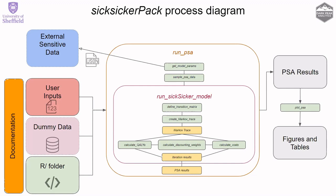The plot_psa function transforms outputs from the run_psa model into a format suitable for the BCEA cost-effectiveness analysis function by Gianluca Baio, which then produces the figures and tables of PSA cost-effectiveness results. Both main functions — run_psa and run_six_sicker_model — use either locally stored or remotely securely stored data via a helper function called get_model_params, which is called internally when the user supplies the source URL of the API and any required credentials.